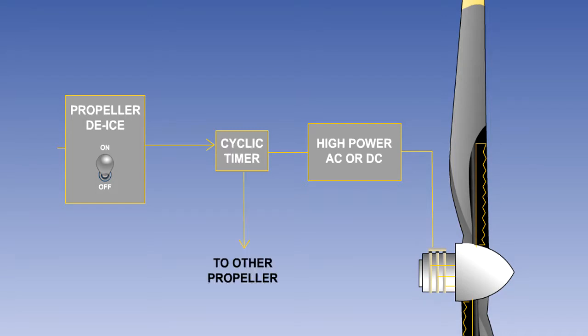These systems consume a relatively high amount of electrical power. However, they are controlled by employing a cyclic timer, which will de-ice the propeller blades of one engine at a time, thus reducing the power requirement.